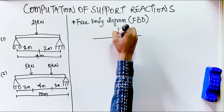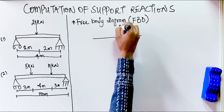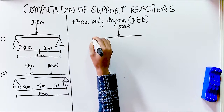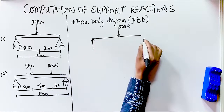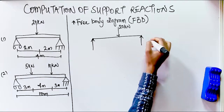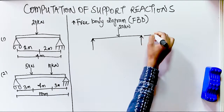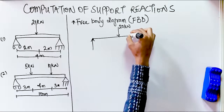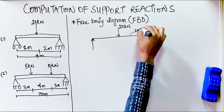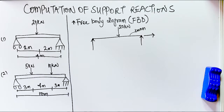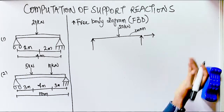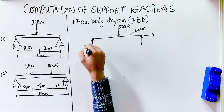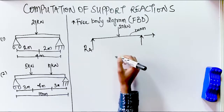This is a simply supported beam with a concentrated load of 20 kilonewtons, also called a point load. Looking at the diagram, it has a roller support and a hinge support. The roller support has one reaction and the hinge support has two reactions — horizontal and vertical. To draw the free body diagram, we first draw the beam as a straight line, then place our point load of 20 kilonewtons.